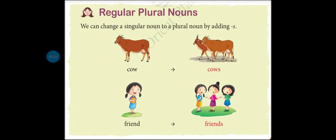Regular plural nouns. We can change a singular noun to a plural noun by adding s. There are different types of rules for making plural nouns. You can see — first picture: cow. Ek hi cow hai, to hum use bulenge cow. Second one: there are two cows, yaani ek se zyada. Jo cheez ek hai wo singular hogi, aur jo cheez ek se zyada hai wo plural. Cow ke peeche s add kiya — cows. Second example: friend — one girl is a friend, three girls are friends.